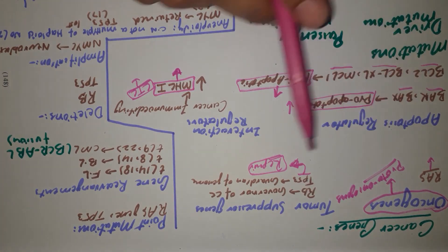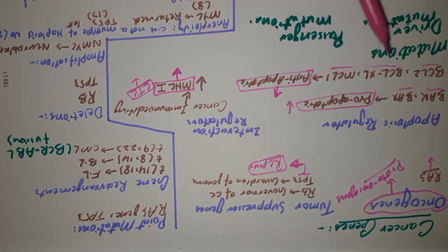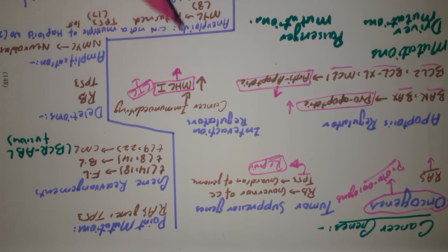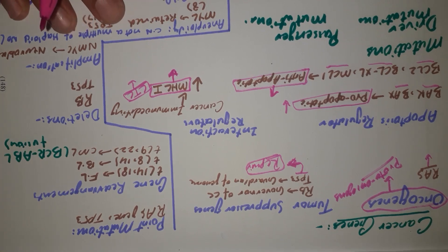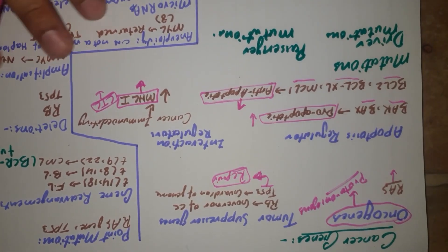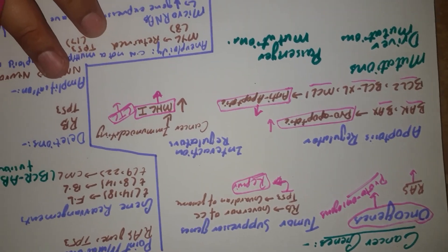In this way, these four gene types — oncogenes, tumor suppressor genes, apoptosis regulators, and interaction regulators — lead to the development of cancer or tumors inside the body. Different kinds of mutations can occur and lead to carcinogenesis.